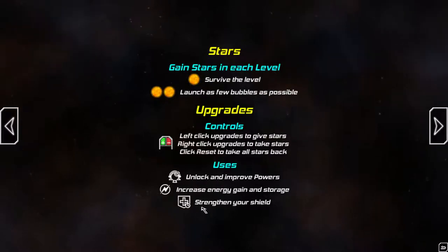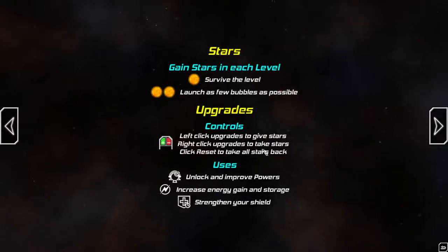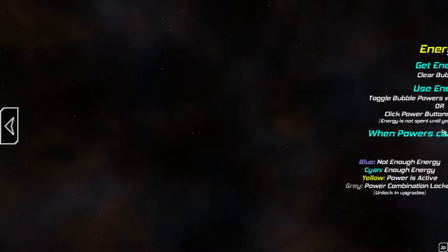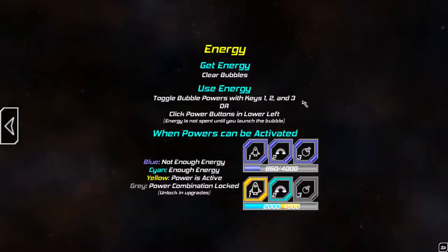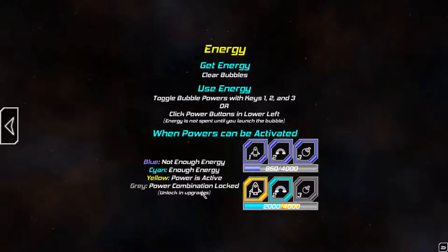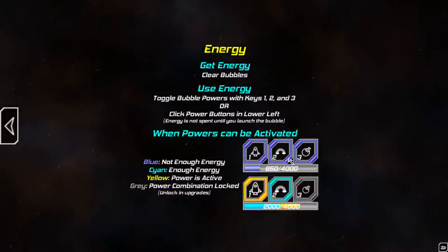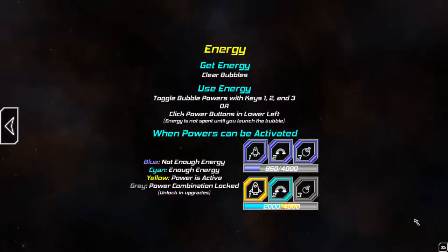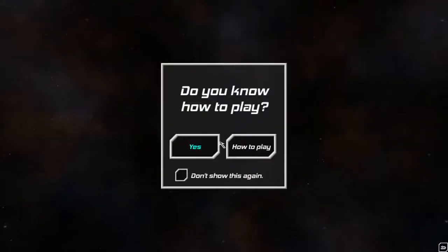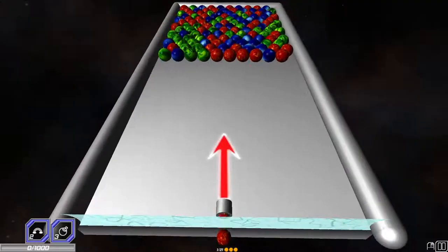Upgrades control. Unlocks and improve powers. Increase energy, strengthen shield, right click upgrades. Energy, get energy, use energy. Toggle bubble powers with keys one, two, or three. So, we have to get energy. Blue means not enough energy. Scion means enough energy. Yellow means power is active. Now I understand.